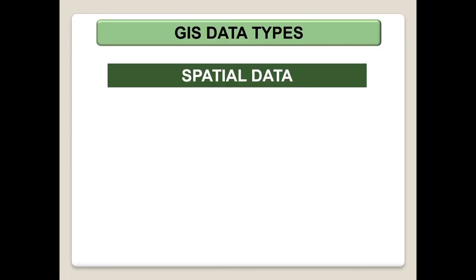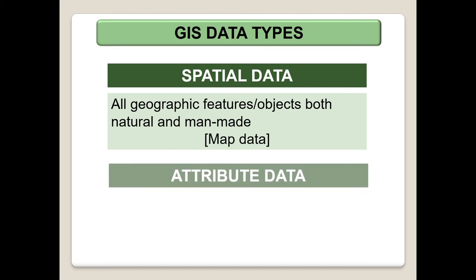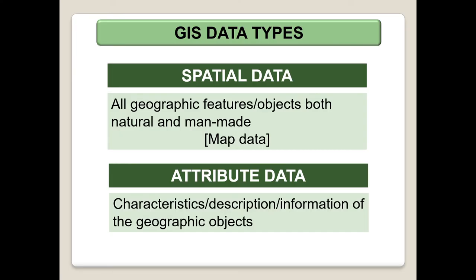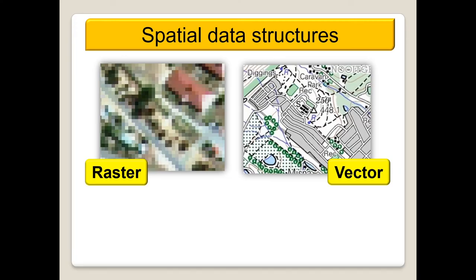Our various GIS data types: spatial data covers all geographic features or objects, both natural or man-made. Attribute data consists of characteristics, descriptions and information about the geographic objects. Our spatial data structures are raster — which uses pixels — and vector, which uses points, lines, and areas.